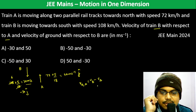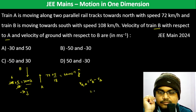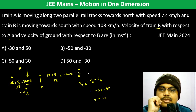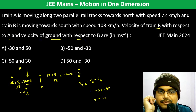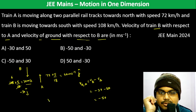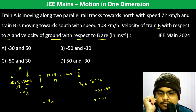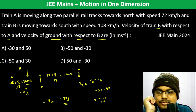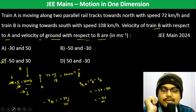Velocity of B with respect to A equals V_B minus V_A, which equals minus 30 minus 20, giving minus 50 j cap. And velocity of ground with respect to B is minus V_B, which equals plus 30 j cap.